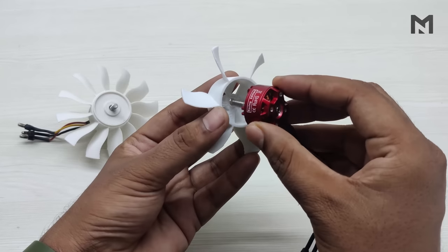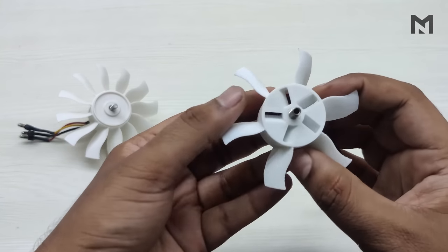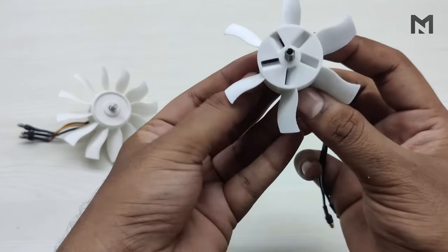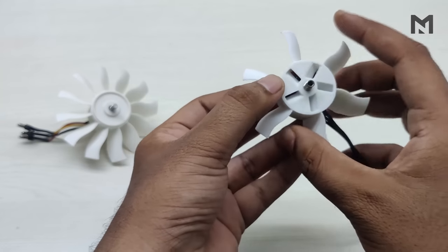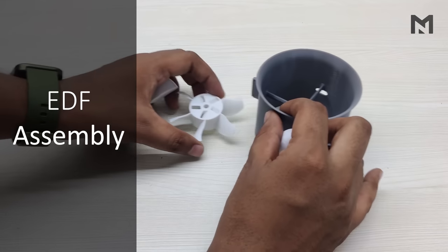When we attach the motor to this propeller, we can clearly see the air vents of the motor. These grooves will push air inside the motor and cool it. Now we will begin the assembly of the ducted fan.